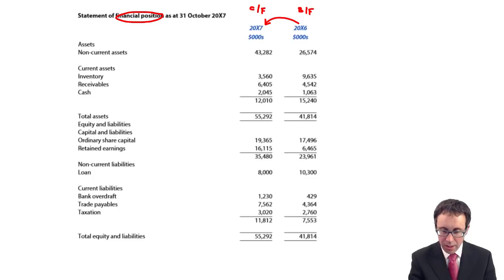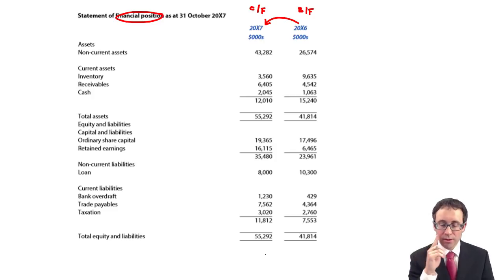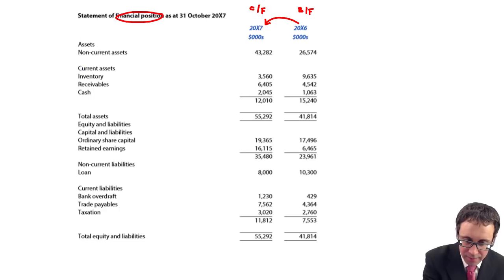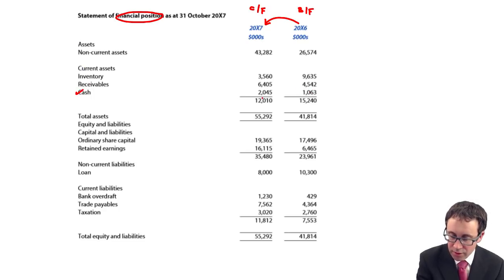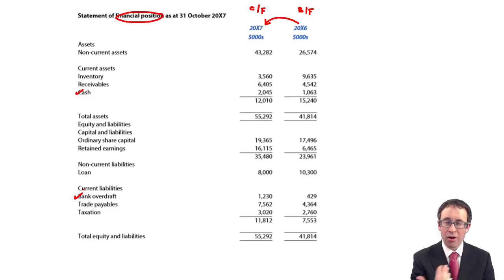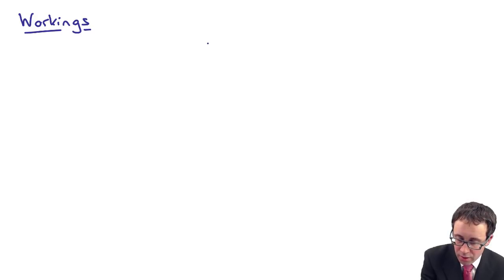We've done step one and step two. Step three is to look at the cash balance and the overdraft balance. We've got a cash balance of 1,063 and 2,045, and a bank overdraft balance of 1,230 and 429. There are no cash equivalents here, so within the workings it's just a bit safer to draw it up as a small table.